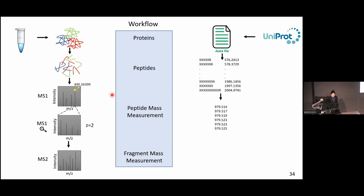We know we isolated a peptide with a specific m/z value and we also know the charge, so we can infer the mass of the isolated peptide. Based on this mass, we extract from the big peptide list only the actual candidates — with some tolerance — so we end up with a small list of candidate peptides.